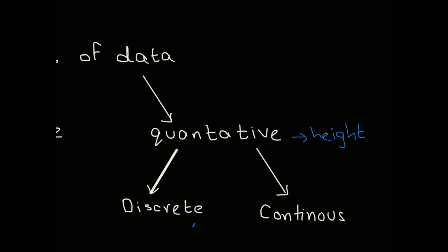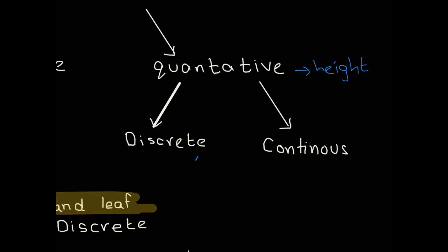There are two types of quantitative data: discrete and continuous. Discrete data is any data that can be counted, and continuous data is data that cannot be counted. For example, the marks I scored in an exam — since I can count my marks, that's discrete data. Shoe size is also discrete data.